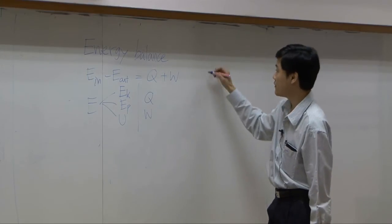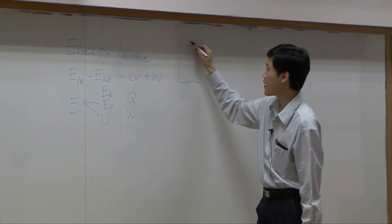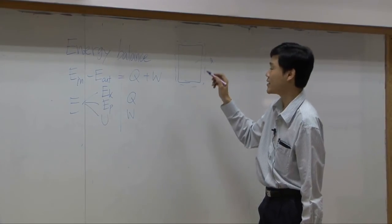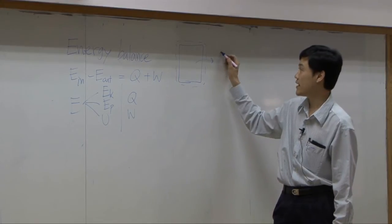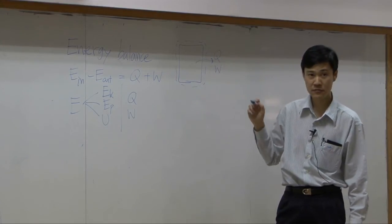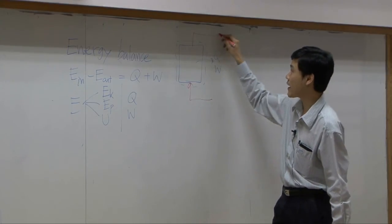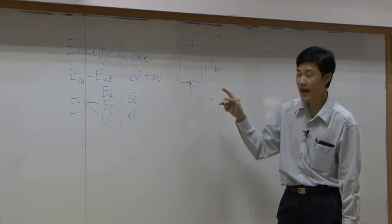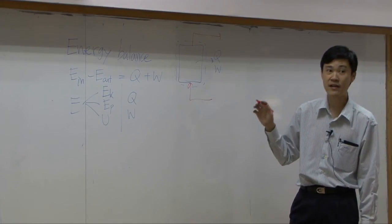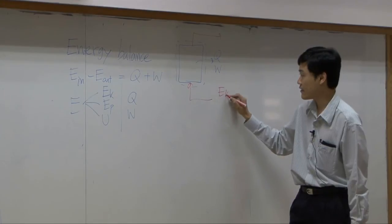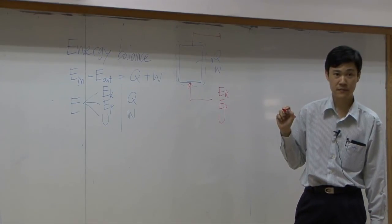If you have closed system, the energy transfer out from the system without depending on mass transfer will be either Q or W. If you have mass going into the system and going out of the system, this mass can carry energy. There are three forms of energy that can be carried: Ek, Ep, and U.